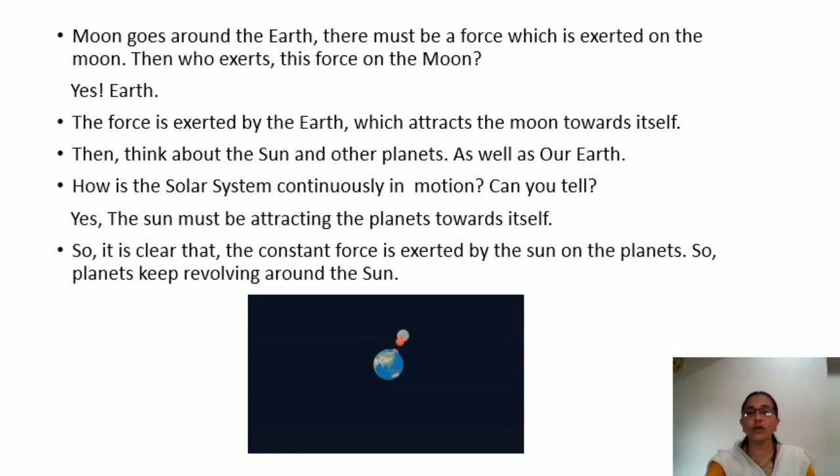How is the solar system continuously in motion? Can you tell? Yes. The sun must be attracting the planets towards itself. So, it is clear that the constant force is exerted by the sun on the planets.